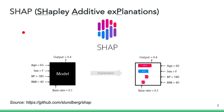SHAP is a post-hoc explanatory method. SHAP stands for Shapley Additive Explanations. The idea is that you apply SHAP to a black box model with known inputs, known output, and a known base rate, which you can think of as the average prediction. Then with the help of the explanations, you're able to understand the direction and the magnitude of each feature's contribution to the predicted output.